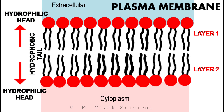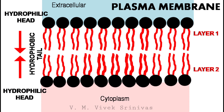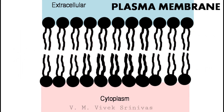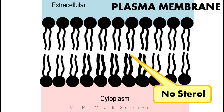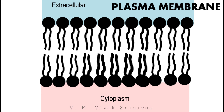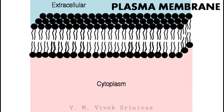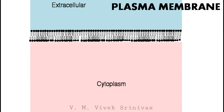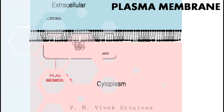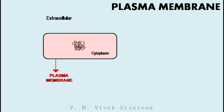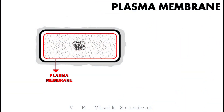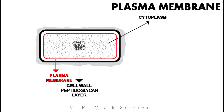Here, the hydrophilic heads are towards the extracellular and towards the cytoplasm, whereas the hydrophobic tails are away from the extracellular and the cytoplasm. The sterols that are normally present in eukaryotic cells are absent here. These phospholipid molecules are arranged as a flat sheet that forms a continuous barrier around the cell. This creates a permeable barrier between the extracellular and the cytoplasm.